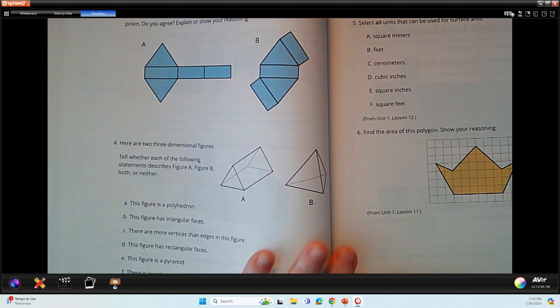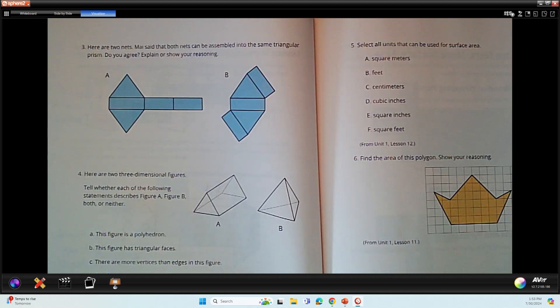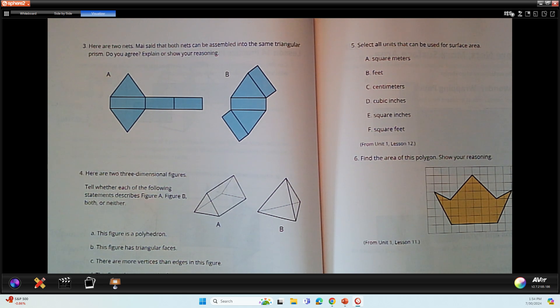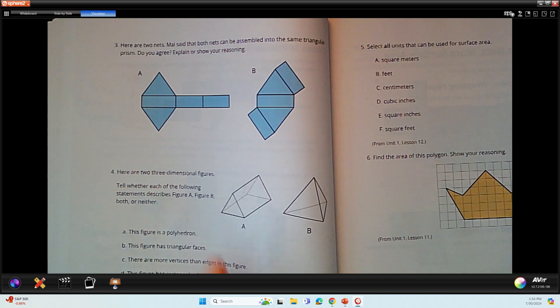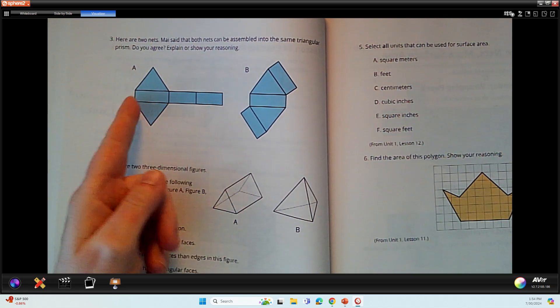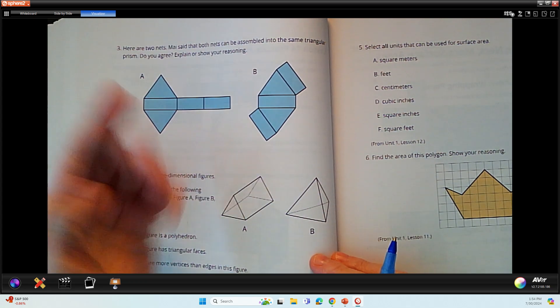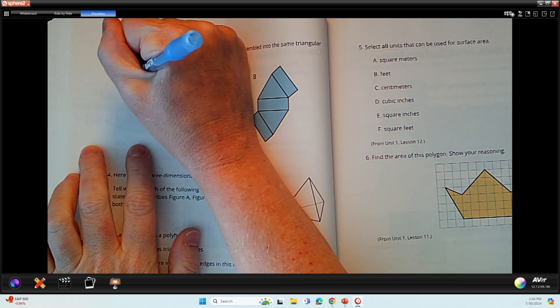All right. Let's take a look at this one. It says here that Maya says both nets can be assembled into the same triangular prism. Do you agree or disagree? Well, they look like they might fold up to be the same. Again, very, very hard to tell. I like this one. I feel like this one is going to fold up to make a triangular prism pretty easily because if I fold these two up, they become the flaps. And then this kind of rolls over. This is going to connect to that. And then this will come around and connect to the other side. So I'm feeling really good about A.